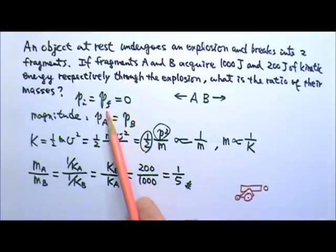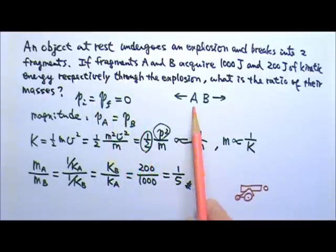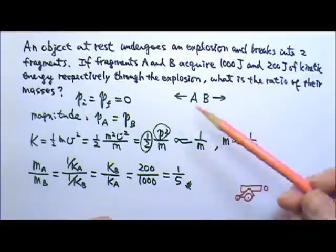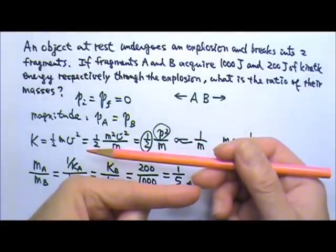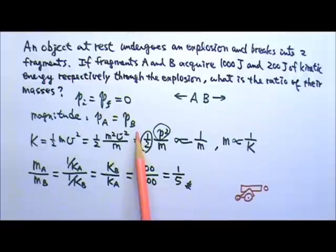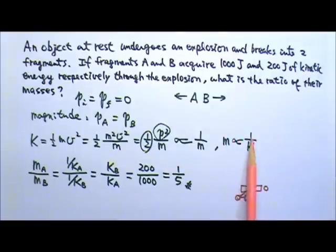It must break into exactly two pieces. To keep final momentum zero, the fragments must have equal magnitude and opposite direction momentum. This equal magnitude momentum leads to the inverse relationship between mass and kinetic energy.